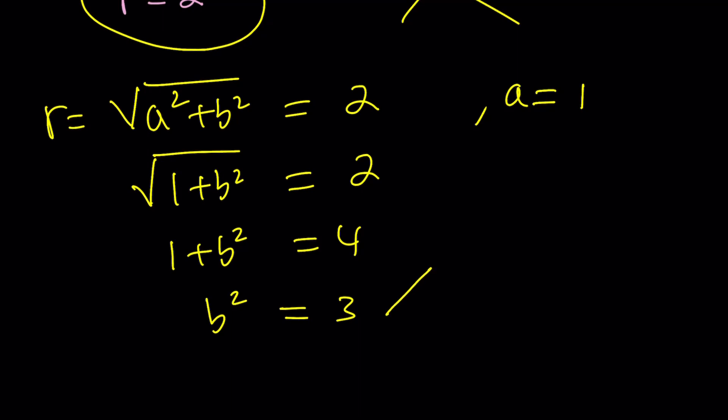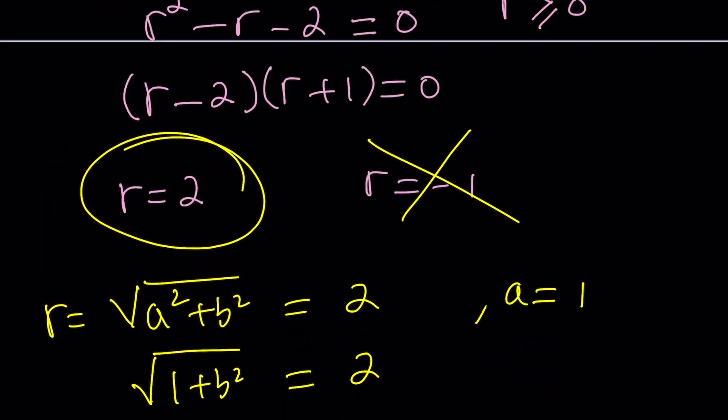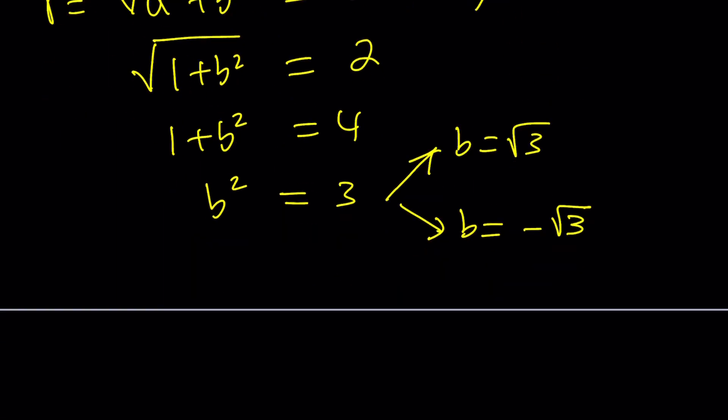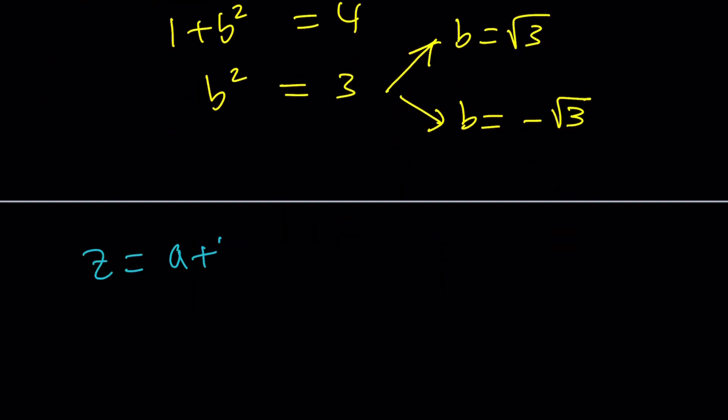Which are both valid, by the way. a and b just have to be real numbers. They don't have to be positive. And b can be square root of 3 or negative square root of 3. And what's that supposed to mean? That means there are two b values for a single a value, which means there are two solutions to this equation. And remember, z was a plus bi.